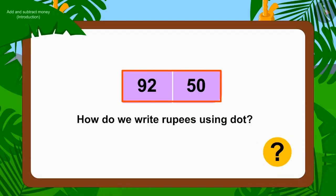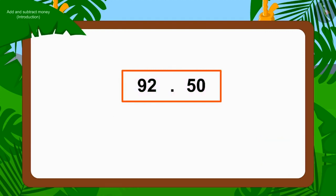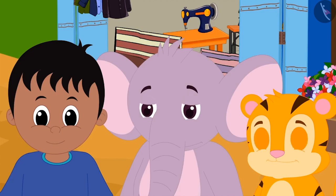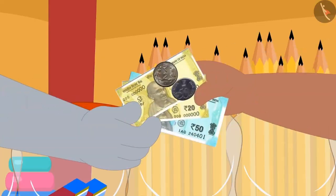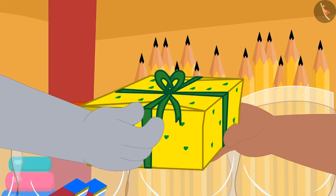How do we write this using a dot for rupees? To the left of the point, we will write the number of rupees and to the right, we place paise. The three together paid the price of the hat and pencil and bought the gift.